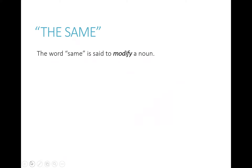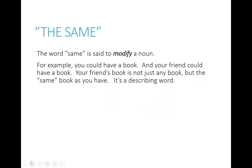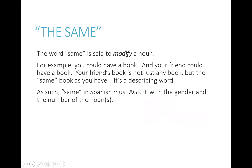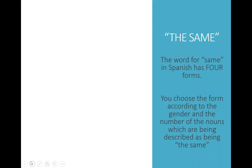You might be wondering why there are four versions of it. The word 'same' is said to modify or change a noun — for example, your friend could have a book, but it's not just any book, it's the same book as you have. It's a describing word. As such, the word 'same' in Spanish must agree with the gender and the number of the nouns being described as being the same. In other words, the word 'same' behaves like an adjective.